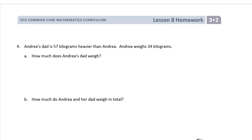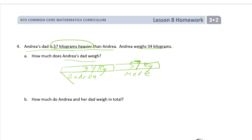Lesson 8. Andrea's dad is 57 kilograms heavier than Andrea. Andrea weighs 34. How much does Andrea's dad weigh? Okay, so Andrea's dad weighs the same as... I'm going to draw a picture here. Andrea, and more. This is the more, because he weighs... if he's heavier, then he weighs more. And this is the more. So Andrea weighs 34 kg, and we know the more is 57, because that's how much heavier it says. 57 kg.